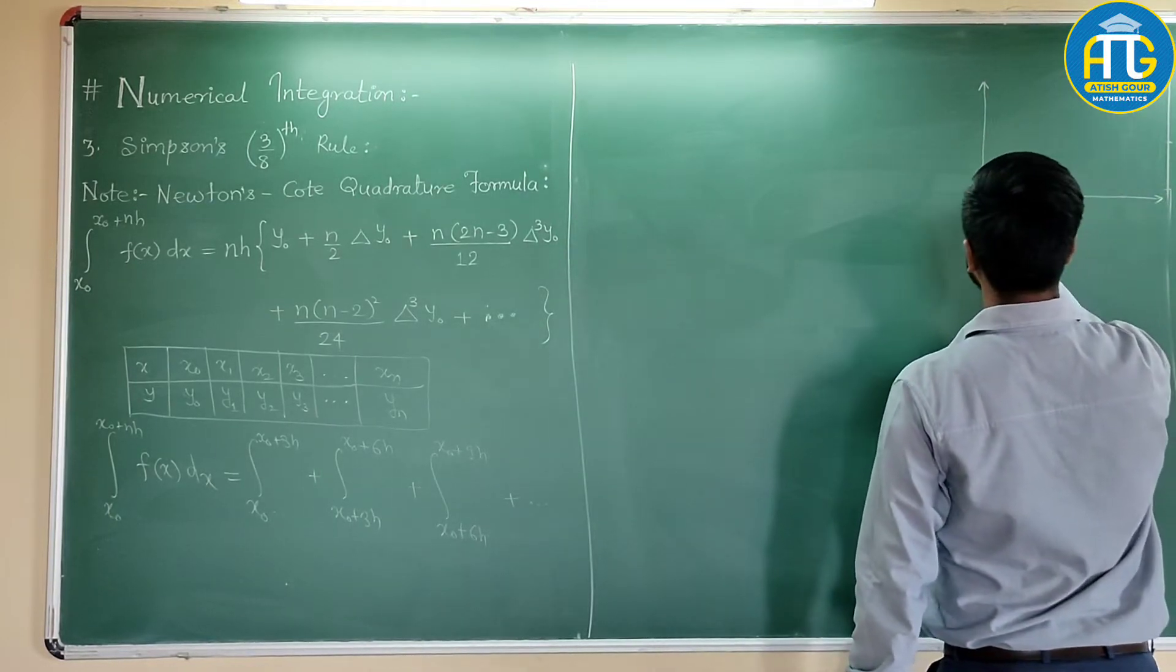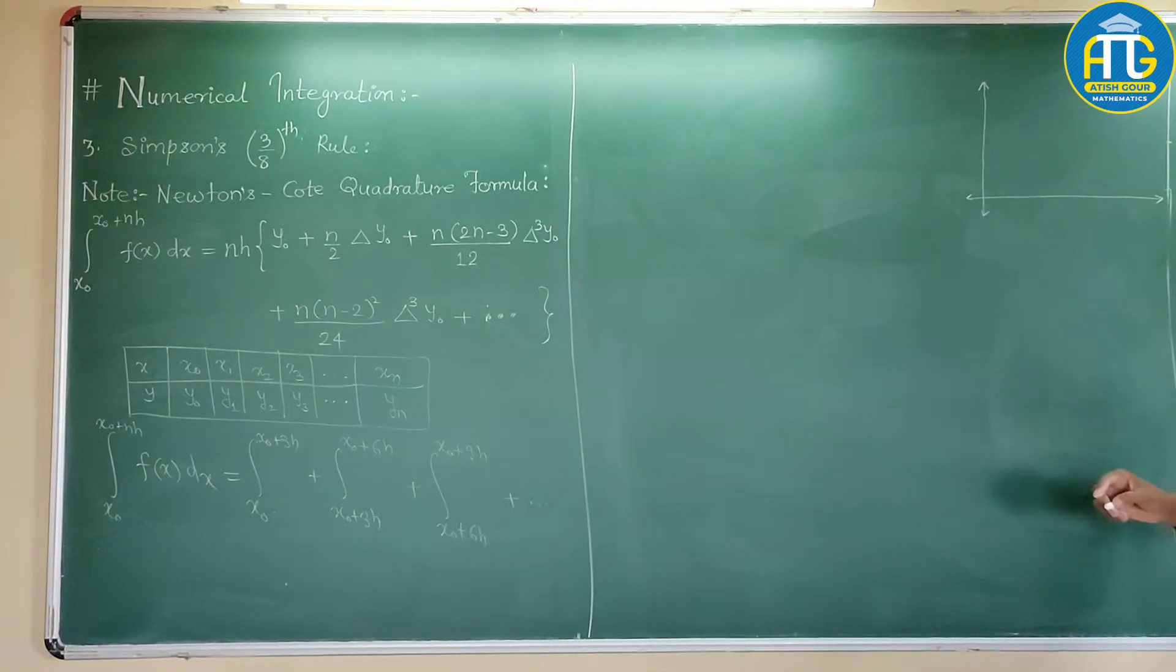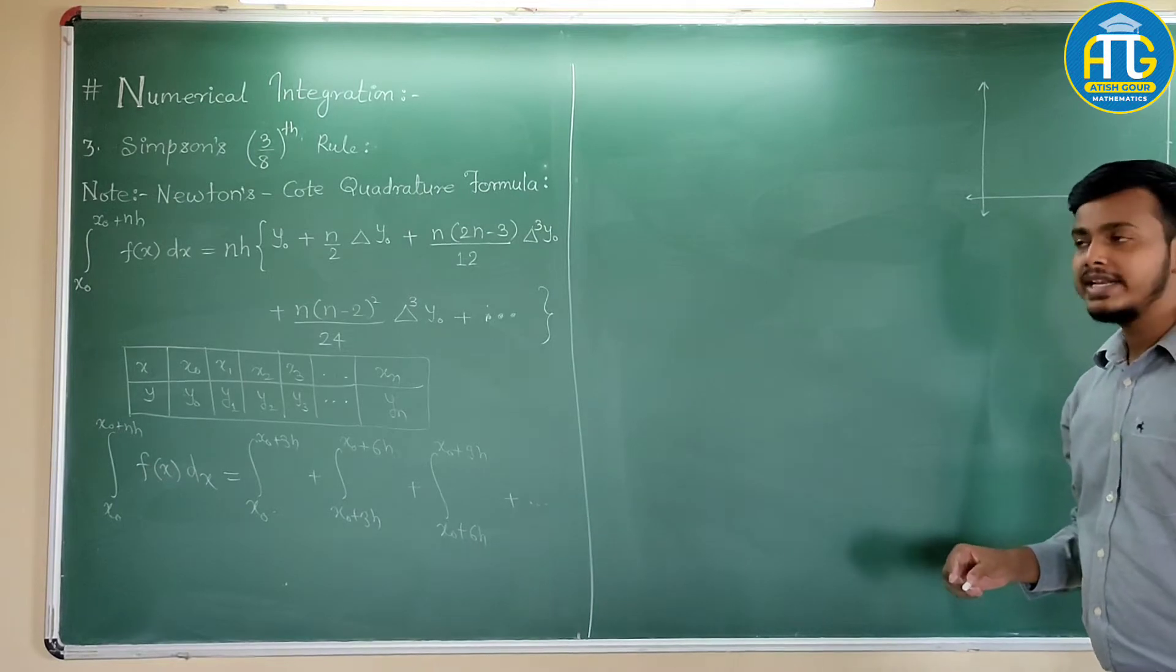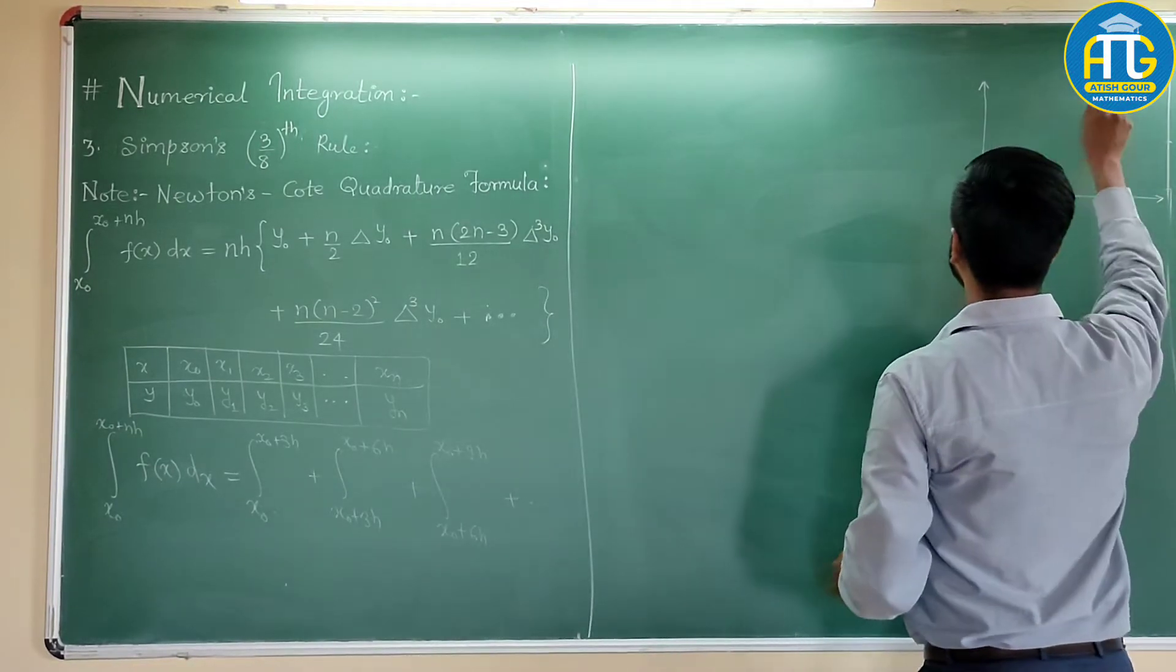Let us understand this with the help of this diagram. Whereas, this integration is nothing but the area under the curve and the process of finding out the area under the curve is known as quadrature. That's why we are making use of that quadrature formula given by Newton's Cotes.